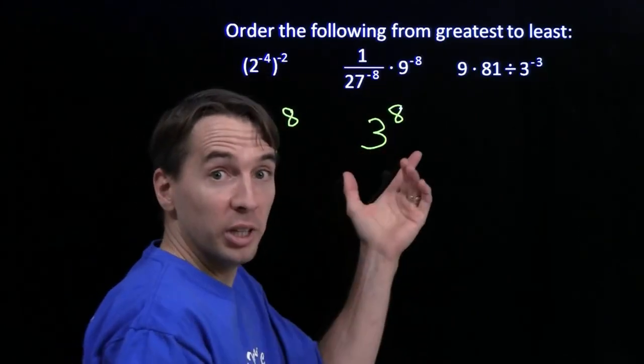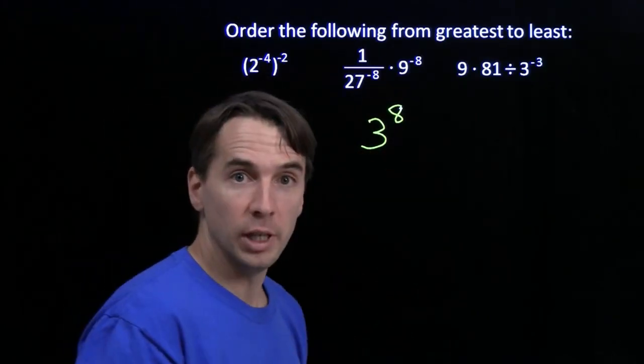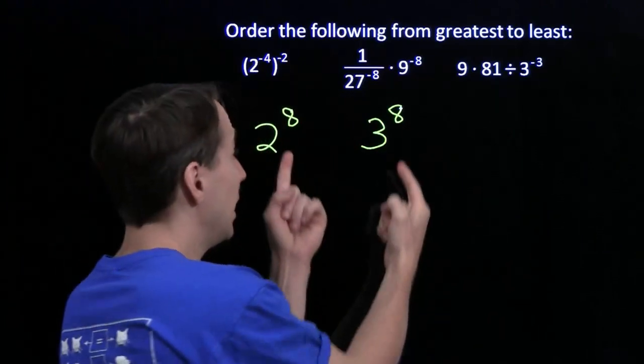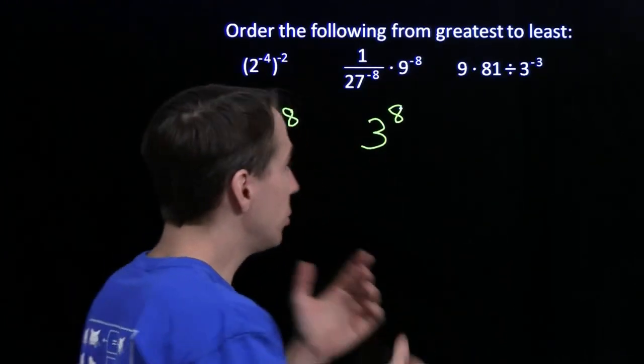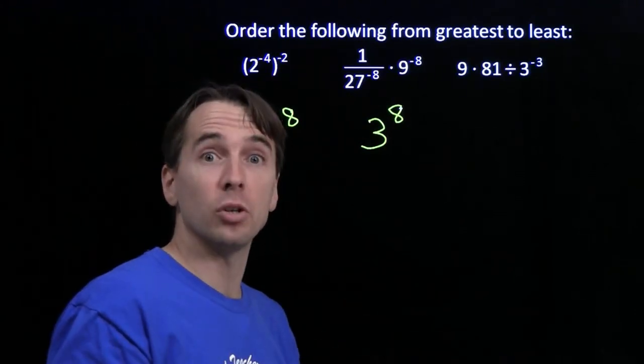And now we can easily compare these two. 3 to the 8th is larger than 2 to the 8th. Now if we have two powers and the exponents are the same, it's easy to compare them. We just look at their bases. And similarly, if we have two powers and their bases are the same, we can just look at their exponents.